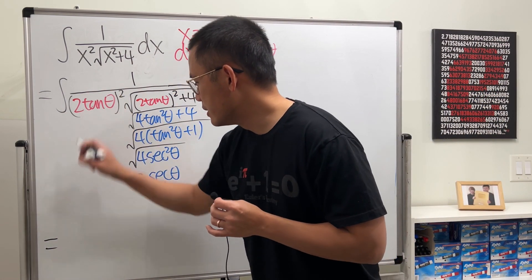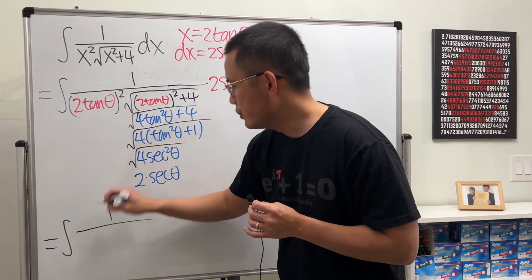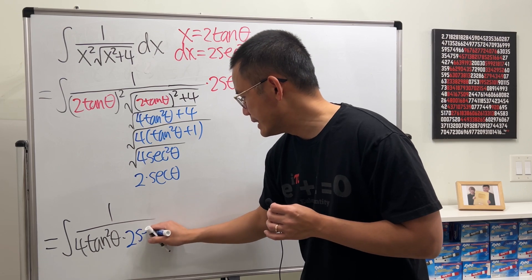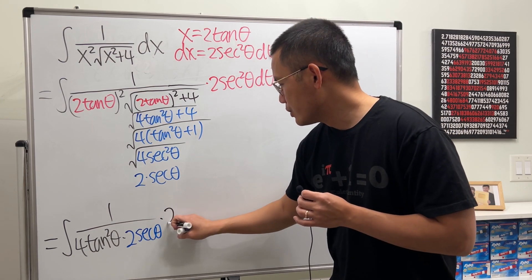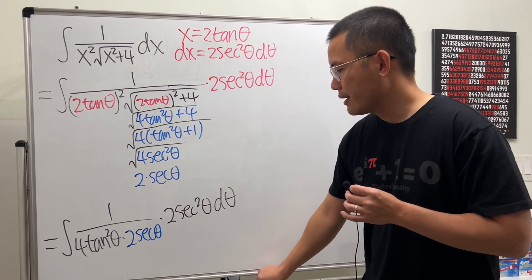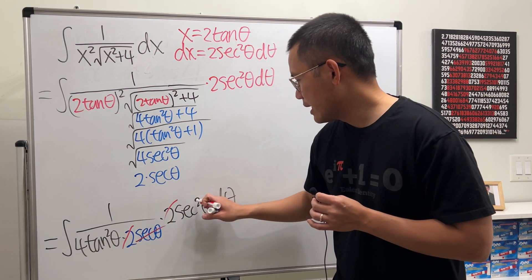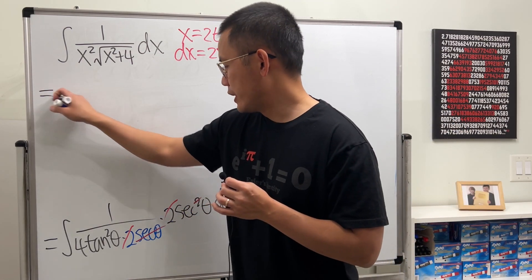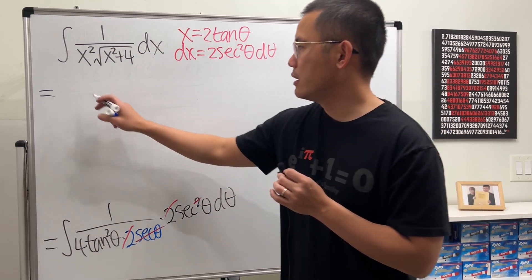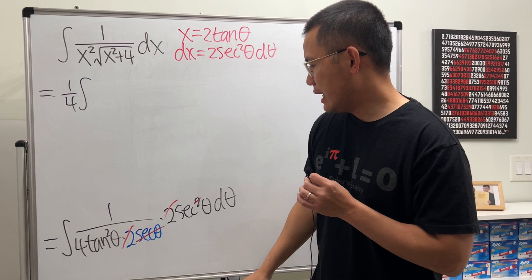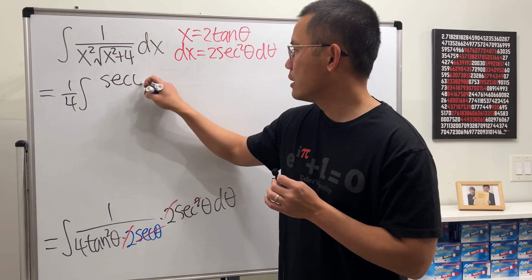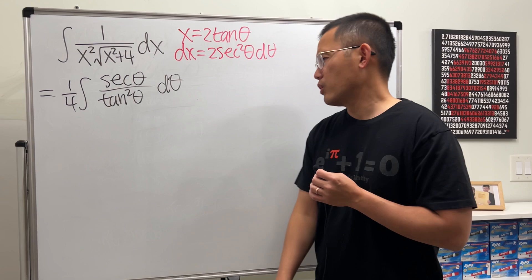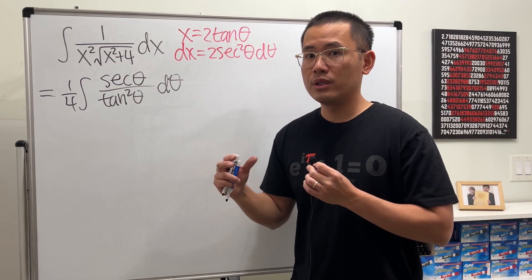So the integral becomes: 1 over [4 tangent squared theta times the blue 2 secant theta] times 2 secant squared theta dθ. The two 2s cancel and one secant cancels, leaving us with 1/4 times the integral of secant theta over tangent squared theta dθ. I'll put the 1/4 outside the integral to make it easier.